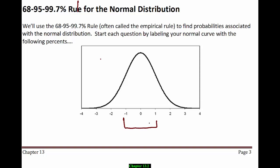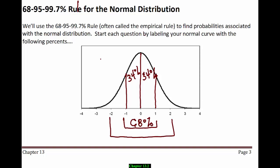Since 68% of the observations are within one standard deviation of the mean, and this curve is symmetric — meaning the left-hand side mirror images the right-hand side — half of the 68% is on each side, which is 34% on the left and 34% on the right. Since 95% is within two standard deviations of the mean, there's 27% left to split equally, leaving 13.5% on each side.